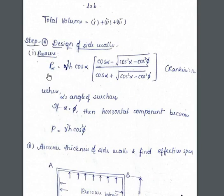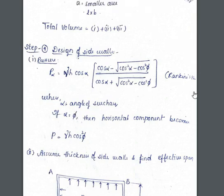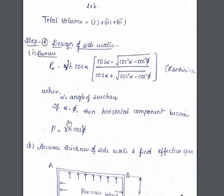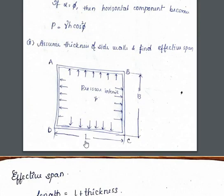Step 4: design of the side walls. First, the pressure formula based on Rankine's theory is: P_alpha = γH × cos(α) × [cos(α) − √(cos²α − cos²φ)] / [cos(α) + √(cos²α − cos²φ)]. Here alpha represents the angle of surcharge. We assume the angle of surcharge equals the angle of repose (alpha = phi), so the horizontal component simplifies to P = γH × cos²φ.